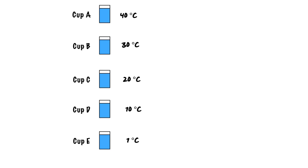Now we're going to look at each one of these cups with respect to cup C. If we look at cup B, we can agree that it is 10 degrees more than cup C. Same thing with cup A — it is 20 degrees more than cup C. So in terms of polarity, we would say that cup B is positive with respect to cup C because it is greater than, and cup A is more positive than cup C. Now if we look at cup D and E, they're below 20 degrees. So with respect to cup C, cup D would be negative and cup E would be negative because they are less than 20 degrees Celsius.